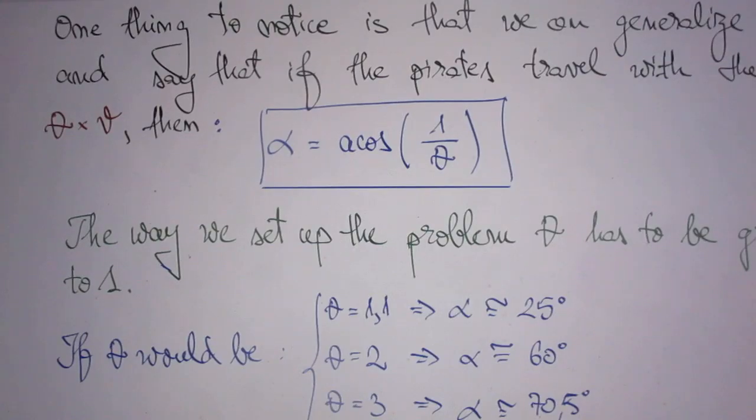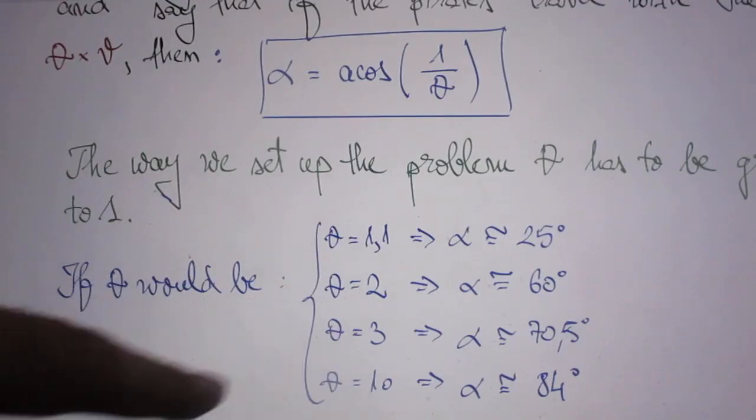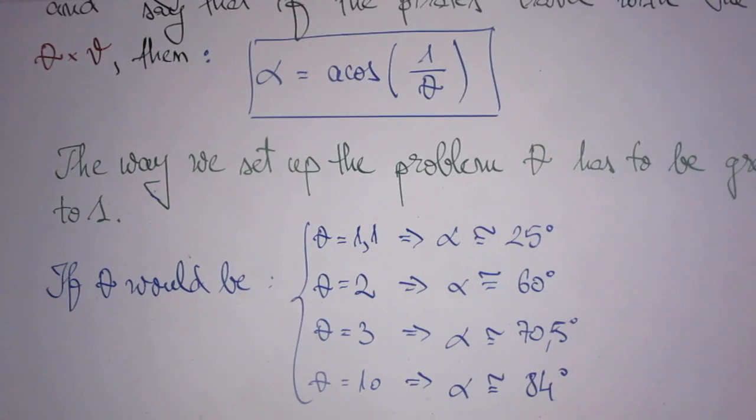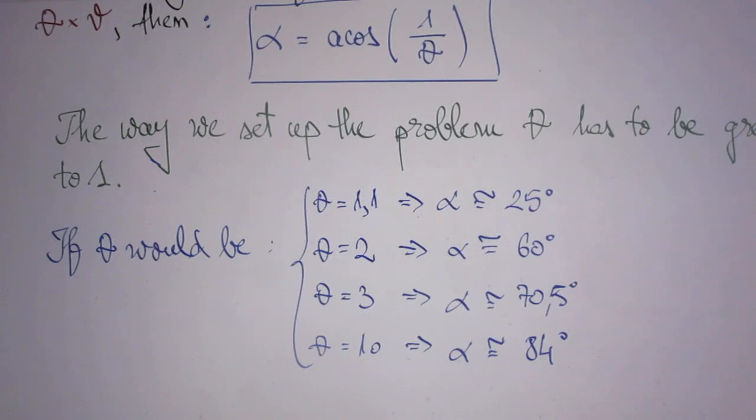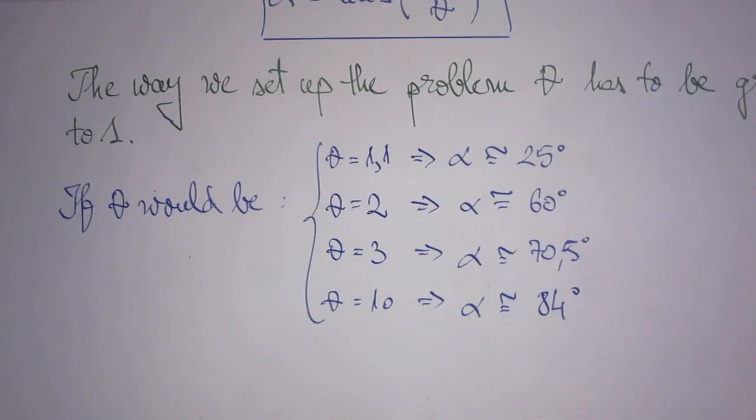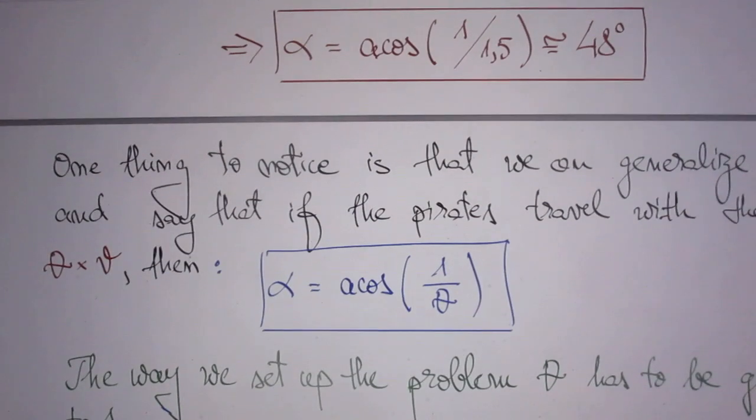The result then is that 1.5 cosine alpha minus 1 is zero, and thus alpha is 48 degrees. And that is the correct answer to this problem. Eugen very cleverly also considered situations where the ratio is not 1.5 between the speeds, but the ratio is 1.1, 2, 3, and 10. Instead of the constant being 1.5, Eugen used four different values and he finds then that alpha has these values.